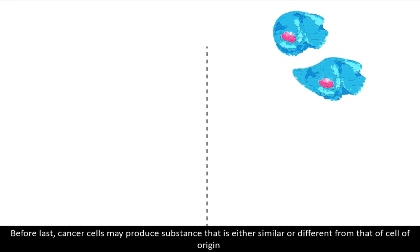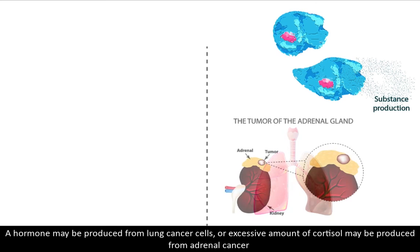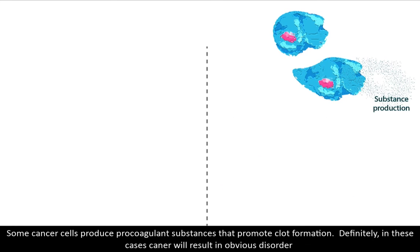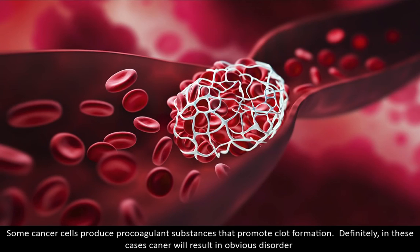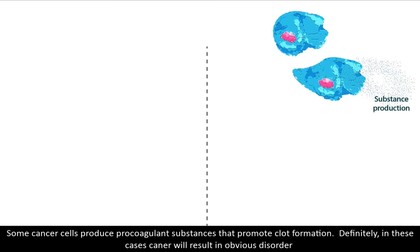Cancer cells may produce substances that are either similar to or different from those of the cell of origin. A hormone may be produced from lung cancer cells, or excessive amounts of cortisol might be produced from adrenal cancer. Some cancer cells may produce procoagulant substances that promote clot formation. In these cases, cancer will result in obvious disorder.